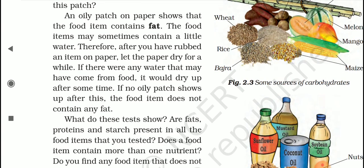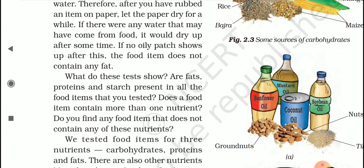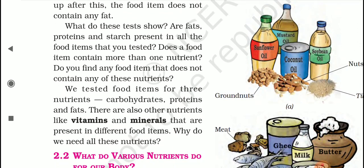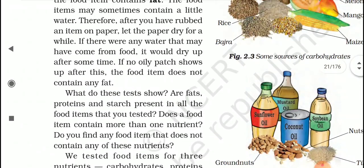Sometimes there may be some water in the food. After rubbing the item on paper, let the paper dry for a while so that water evaporates. If no oily patch shows up after drying, the food item does not contain any fat. Some food items have only starch, some have only fats, some have protein, but there are some food items that contain more than one nutrient. There are also other nutrients like vitamins and minerals that are present in different food items, and all these nutrients are needed for our body.